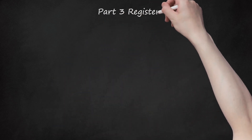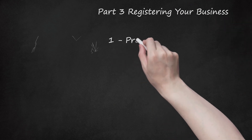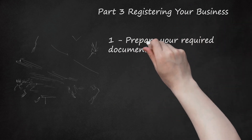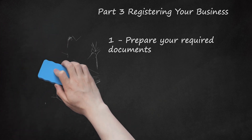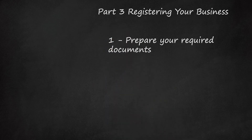Part 3: Registering Your Business. Prepare Your Required Documents. The type of document you will need to file with the Secretary of State will depend on the business structure you chose. All of the documents and forms can be found on the Secretary of State's website. Use the following forms for the following types of businesses: Articles of Incorporation if you are starting a corporation. This form will ask you to provide the Secretary of State with the business name, purpose, registered agent, and corporate address.